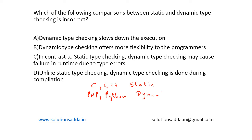Option A is true because we are checking it during runtime, so this option is correct. Option B — dynamic type checking offers more flexibility to the programmers — yes, this is also true. Option C — in contrast to static type checking, dynamic type checking may cause failure at runtime due to type errors — yes, this is also correct.